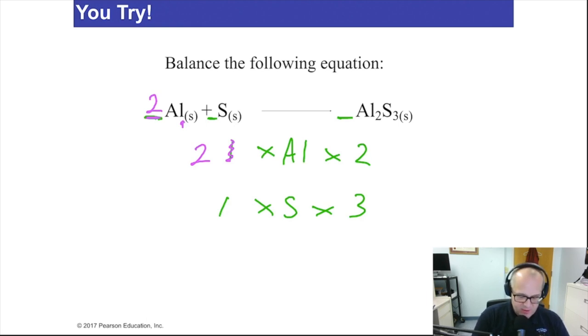And if I put the magic number three here, I'll have three sulfur on the left. That seems like it's balanced now. Let's take a look. Two aluminum. One times two. Two aluminum. Three sulfur. One times three. Three sulfur. So that's balanced. This equation is now mass balanced. We've not violated the law of conservation of mass.